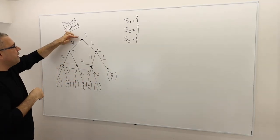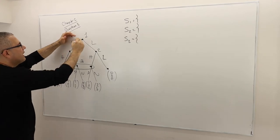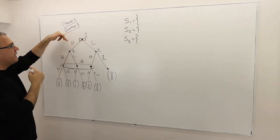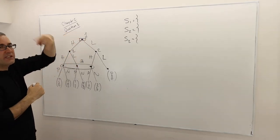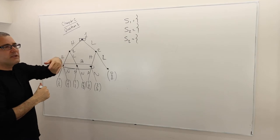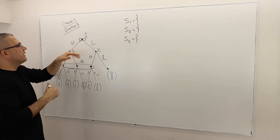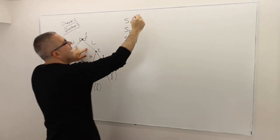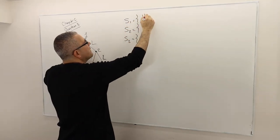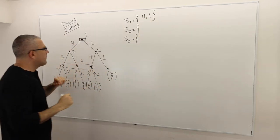How many information sets does player one have? He has only one information set, and in this information set he has two available actions. So he must have two to the power one strategies, and they are basically H and L.